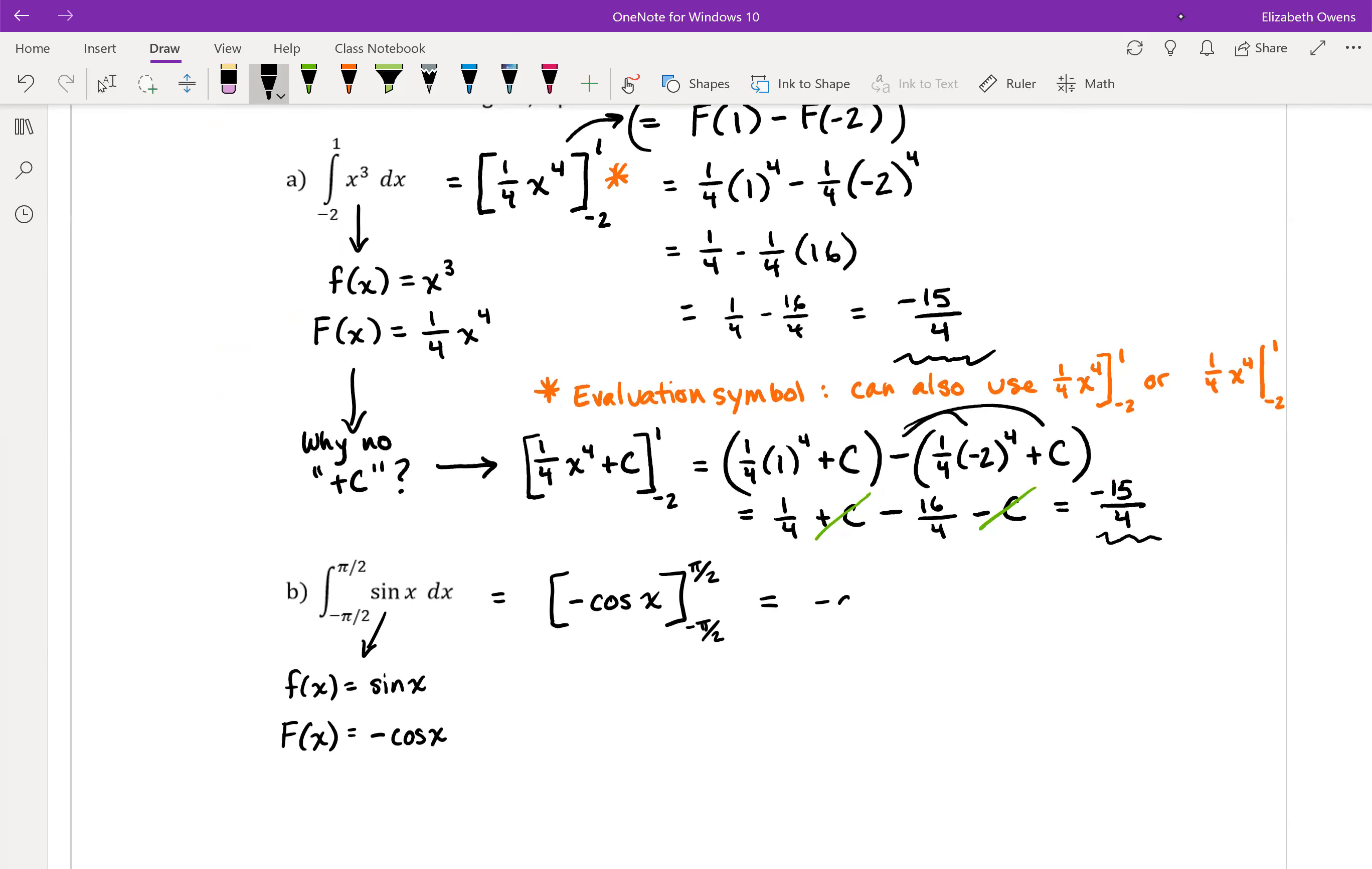We're going to take negative cosine of pi over 2, plugging in that upper limit of integration, and then we're going to subtract and plug in our lower limit of integration, negative pi over 2.